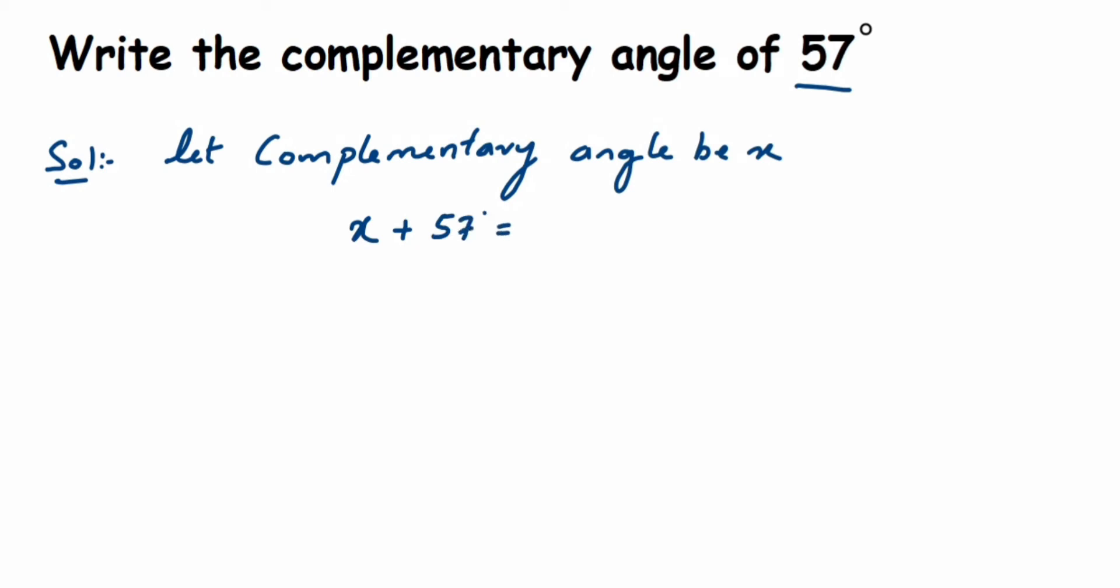So we want the value of x. We're going to transpose this 57 to the other side, so x will be equal to 90 minus 57. Now 57 was in addition, when you take this to the other side it will come in subtraction. Now subtract this, 90 minus 57 will be 33.